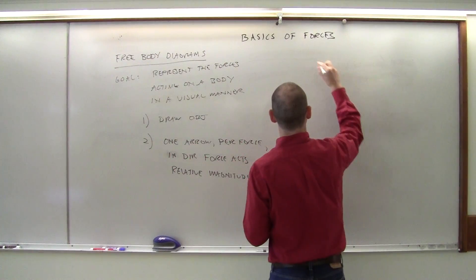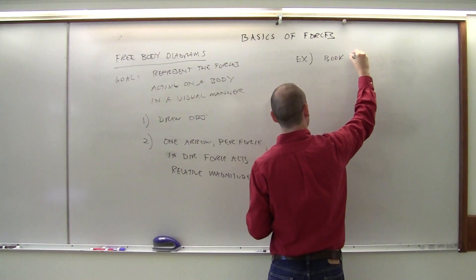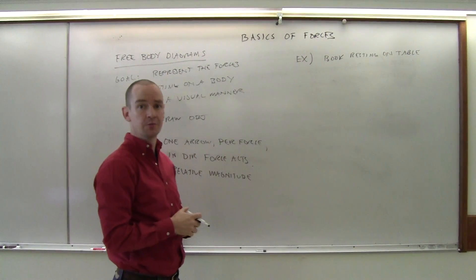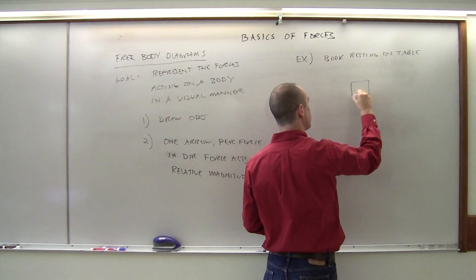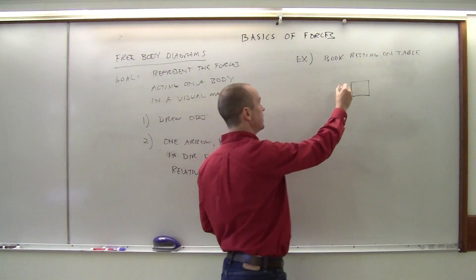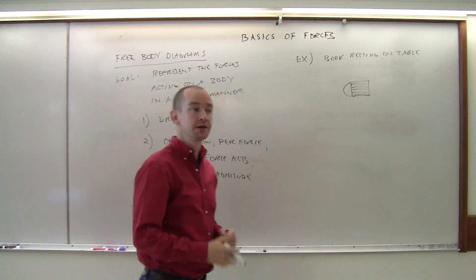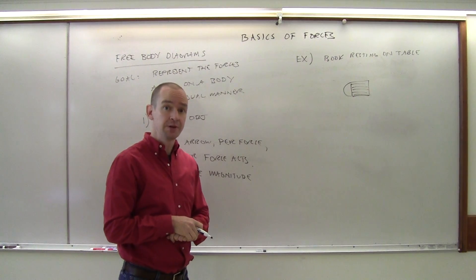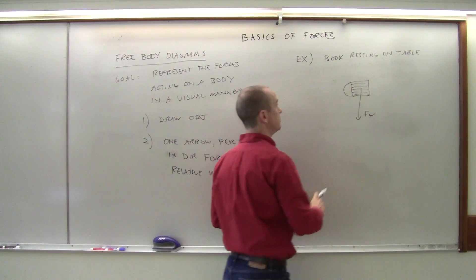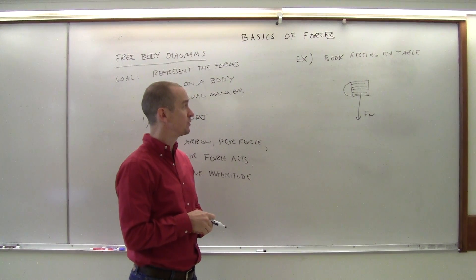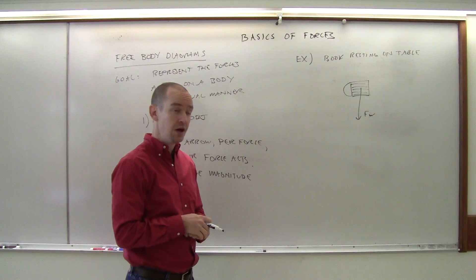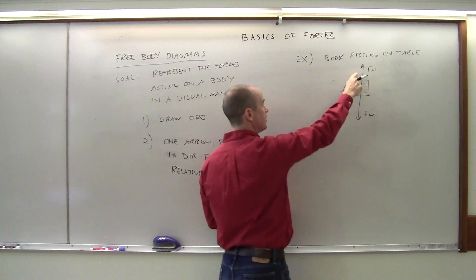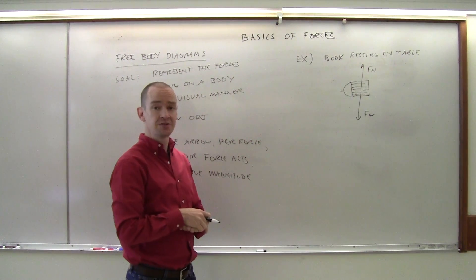If a book rests on a table, what does the free body diagram look like? First, draw the book. There are two forces acting: the force of weight, because gravity is acting downward, and the normal force pointing upward, because the book doesn't fall through the table. The surface is along the horizontal axis, so the normal force is perpendicular to it, pointing up. Notice the lengths of those two arrows are about the same, because they're balanced — the book is just sitting on the table.